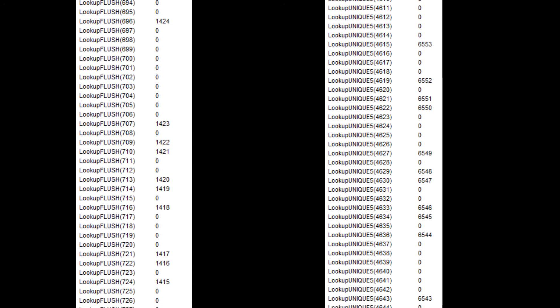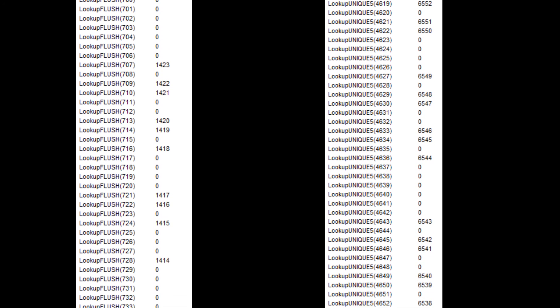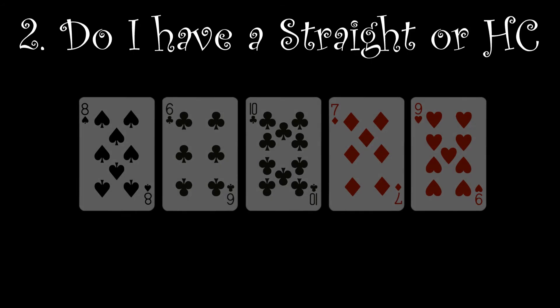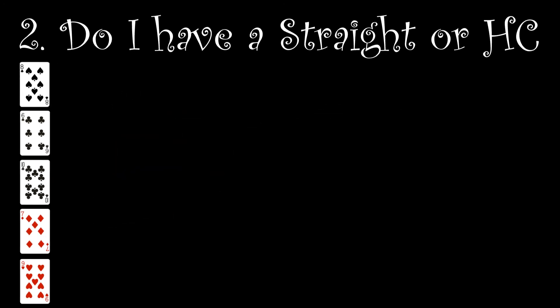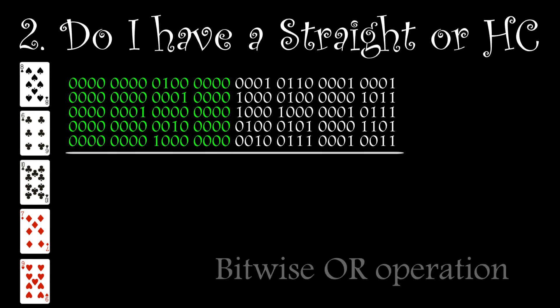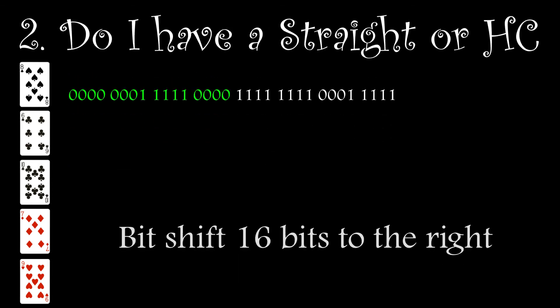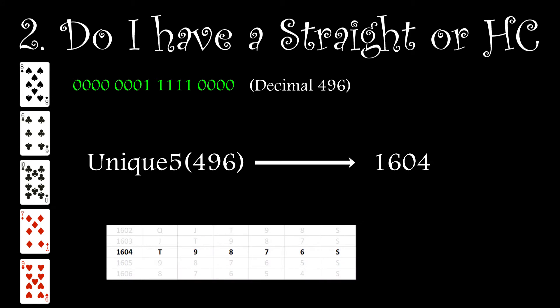I now have two fully populated lookup tables which cover both flush and straight high card combinations. So if a hand I'm trying to rank isn't a flush, I must next check the Unique 5 array and see what it returns. To do this with the example shown, I need to extract the card value ref from the five cards and use that as a lookup index. In this case it's row 496 which returns a hand ranking of 1604. Checking that on the table, I can see that it's correct.